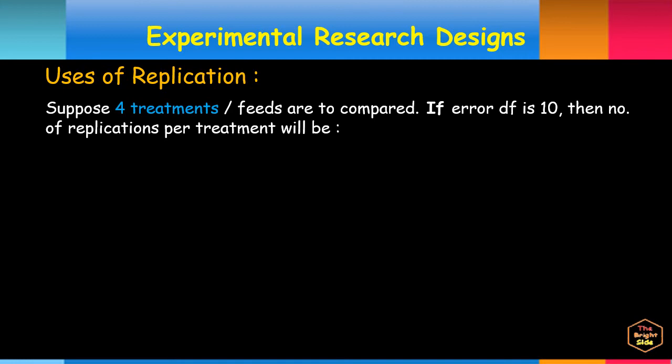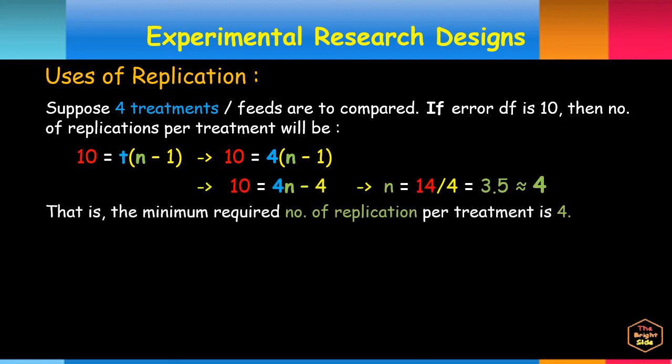Let's have an example. Suppose there are four treatments or feeds are to compare. If error df is 10, then number of replications per treatment can be solved using the formula. Now, we got four replications as a minimum requirement.